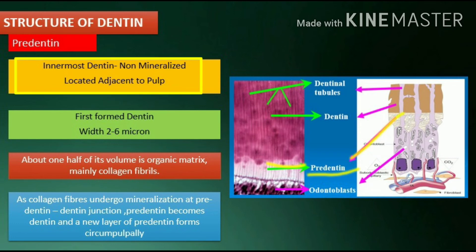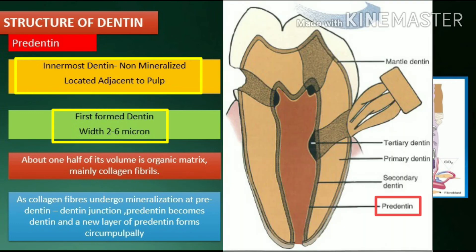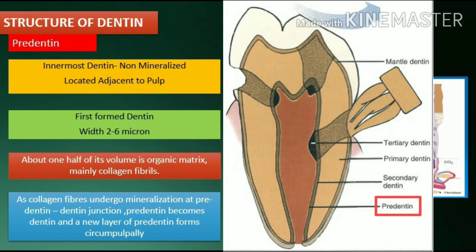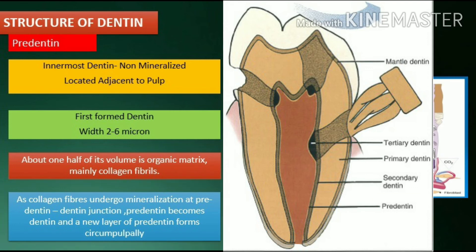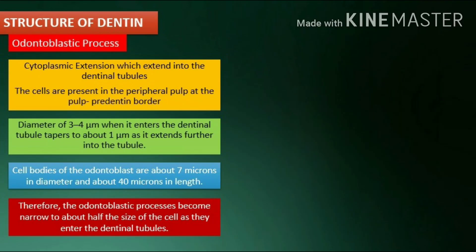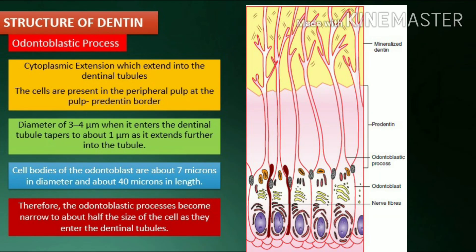Predentin is the innermost portion of dentin that is not mineralized. It represents the first-formed dentin and is located adjacent to the pulpal tissue, being 2 to 6 microns thick. Its thickness depends on the activity of the odontoblast. As the collagen fibers undergo mineralization at the predentin-dentin front, predentin becomes dentin, and a new layer of predentin forms around the pulpal tissue.